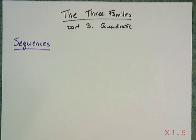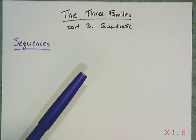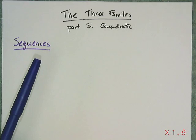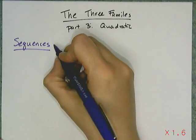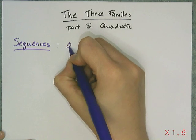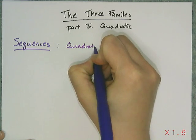So in this lesson we're going to wrap up the three families and talk about quadratic functions. First off, let's see how they appeared in the sequences unit. These were the ones that were neither arithmetic or geometric, and we just called them quadratic because there's really nothing else to call them.